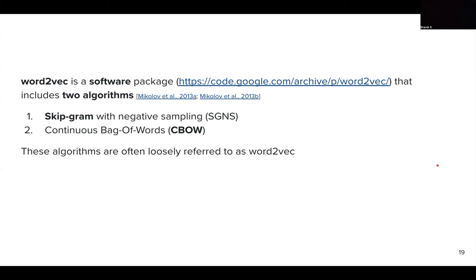Moving on to Word2Vec — a software package that includes two algorithms introduced in 2013. One is skip-gram with negative sampling, and the other is continuous bag of words. You will hear people loosely referring to these algorithms as Word2Vec. When someone says Word2Vec, they mean they used Word2Vec embeddings, which may have been produced with either one of these algorithms. Today we are going to cover skip-gram with negative sampling.